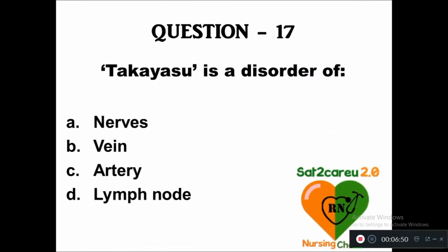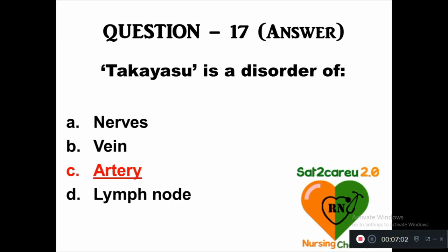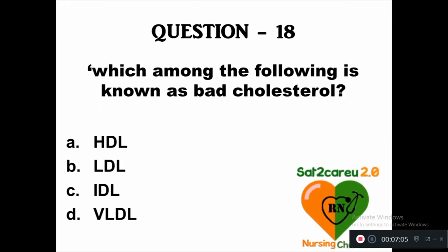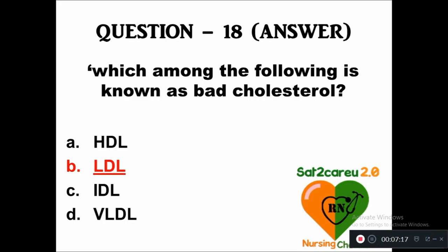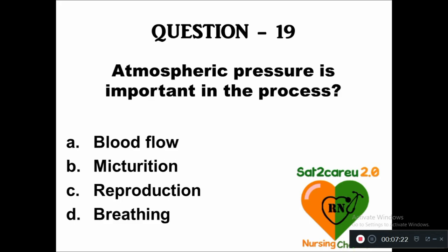Question 17: Takayasu is a disorder of — option A: nose, B: vein, C: artery, D: lymph node. The right answer is Takayasu is a disorder of arteries. Question 18: Which of the following is known as bad cholesterol — option A: HDL, B: VLDL, C: LDL, D: VLDL. Bad cholesterol is LDL.